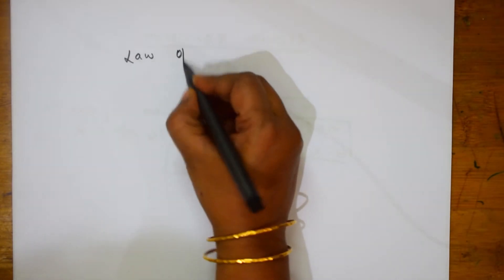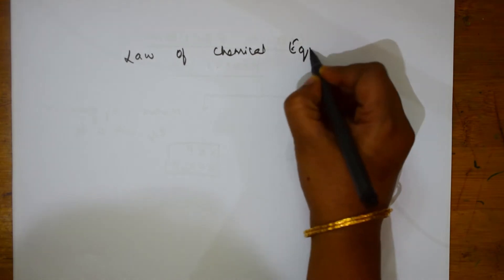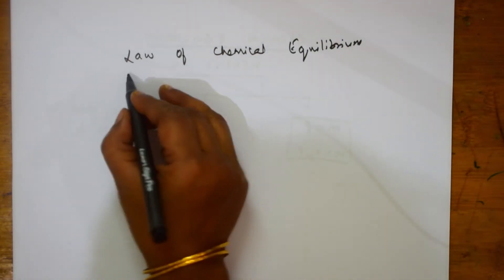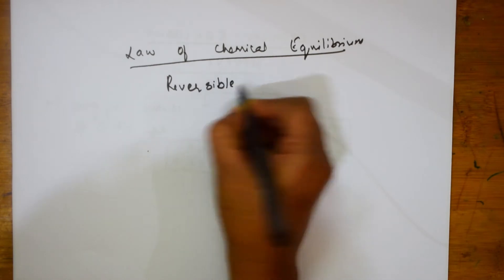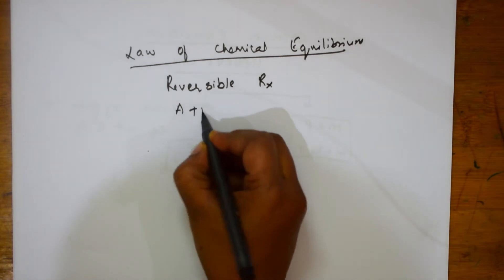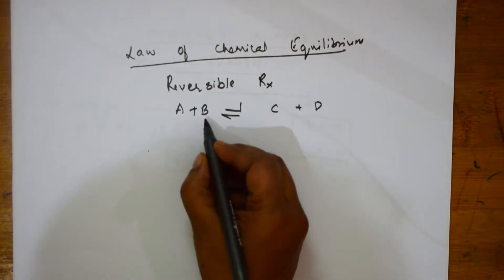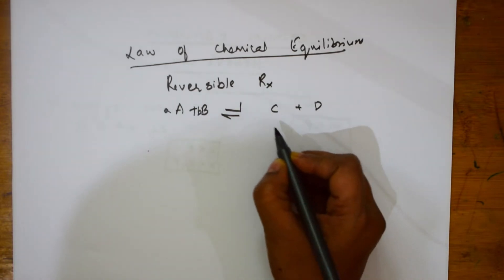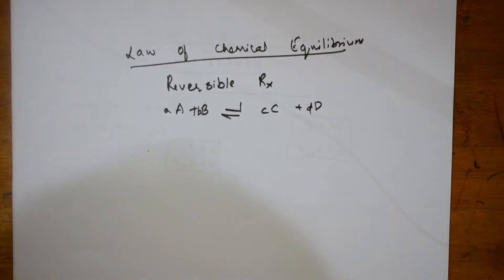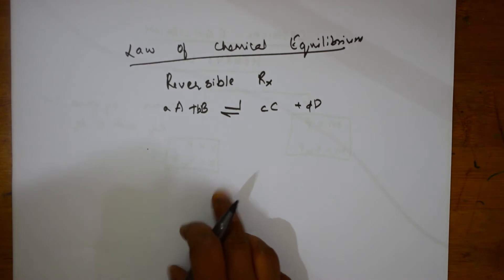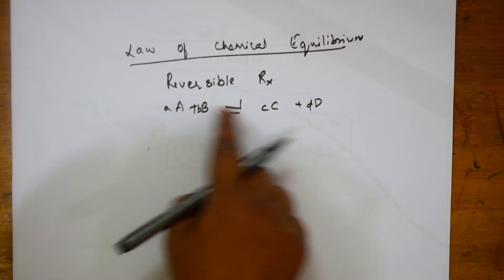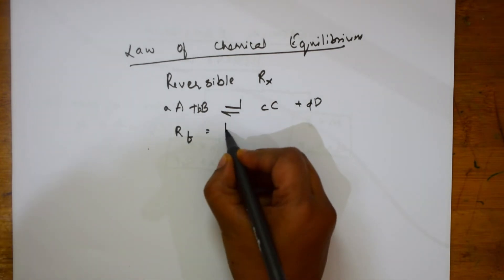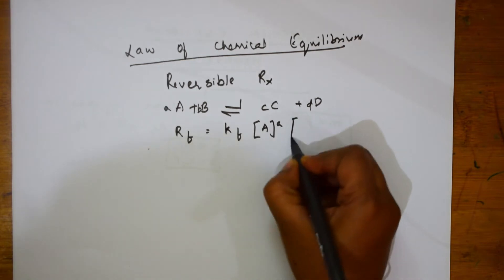Now let us learn the law of chemical equilibrium. Suppose we have a reversible reaction: aA + bB ⇌ cC + dD, where a, b, c, d are the respective coefficients. The rate of the forward reaction is RF = KF × [A]^a × [B]^b.